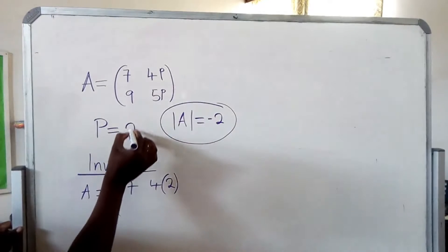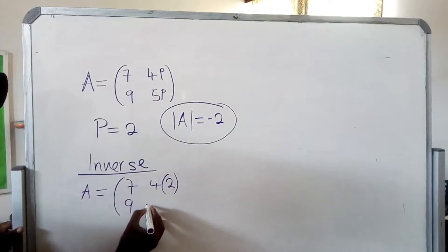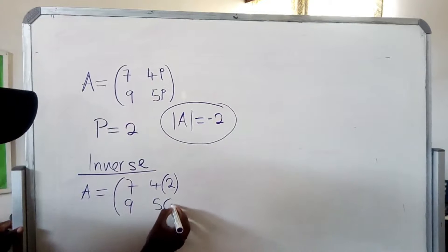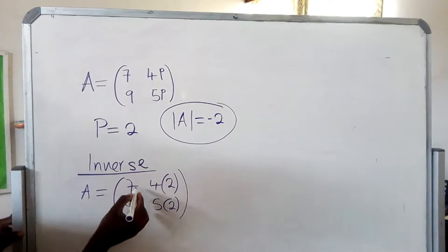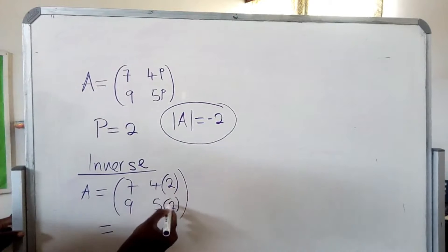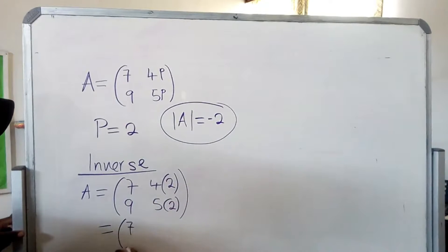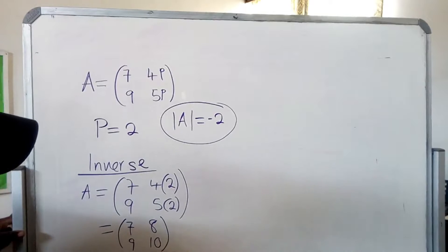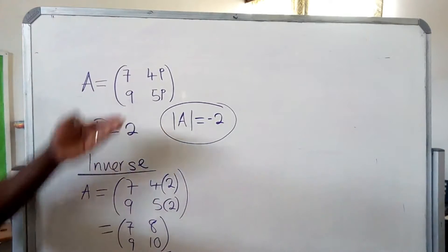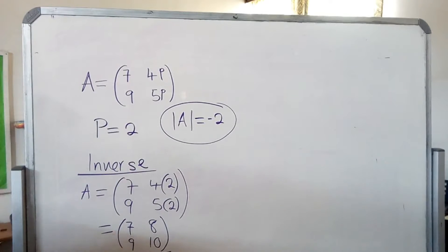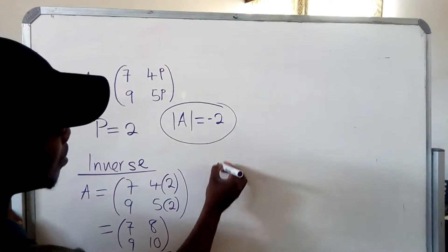Where is P here, we put the 2. So you see the way it looks. This here shows that we are multiplying, so it will be 7 here, 2 times 4 times 2 which is 8 here, it's 9, 5 times 2 is 10. So this is how the actual matrix looks like.